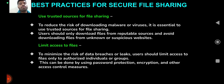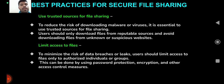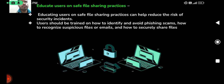Best practices for secure file sharing include: first, use of trusted sources for file sharing — using trusted sources eliminates the risk of malware and viruses. Second, limit access to files — to minimize the risk of data breaches or leaks, users should limit access to authorized individuals or groups using password protection, encryption, and other access control measures. Third, educate users on safe file sharing practices to reduce the risk of security incidents. Users should be trained to identify phishing scams, recognize suspicious files or emails, and securely share files.